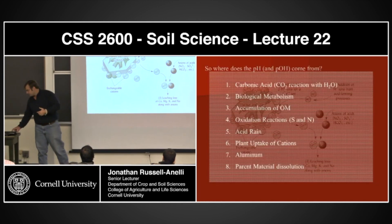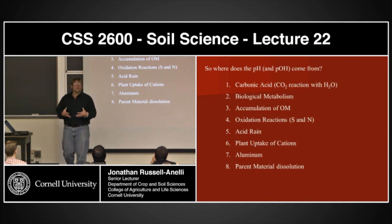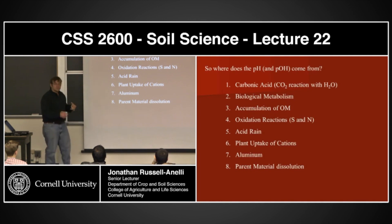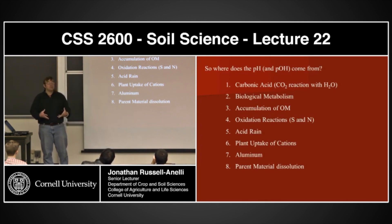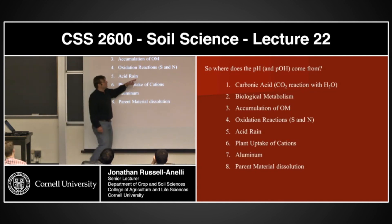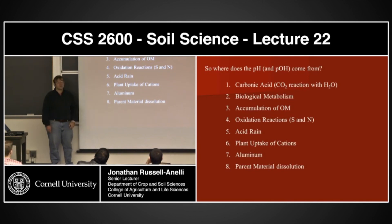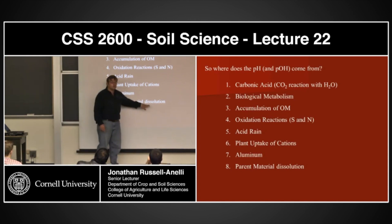What controls the pH? Where does the pH come from? It's basically broken up into eight different things. The first is carbonic acid — that's the rainwater. The second is biological metabolism — organisms just doing what they do. The third is accumulation of organic material. The fourth is oxidation reactions, particularly sulfur and nitrogen. The fifth is acid rain. The sixth is plant uptake of cations. The seventh is aluminum. And the eighth is the parent material — specifically the weathering of that parent material.